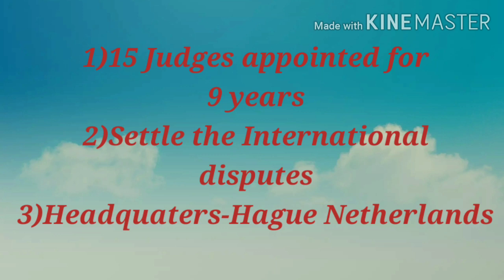The fifth organ is the International Court of Justice. Fifteen judges are appointed for a period of nine years. Just like there is a Supreme Court in India, the International Court of Justice settles disputes between nations. Its headquarters are located in The Hague, Netherlands — it is the only UN organ whose headquarters are located outside the USA, in the European continent.